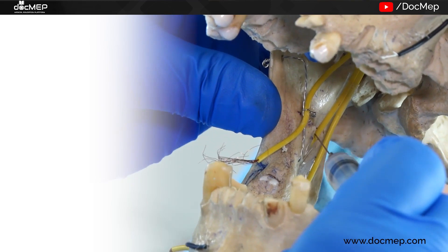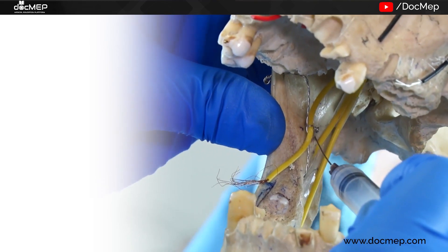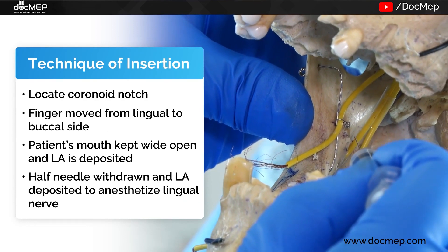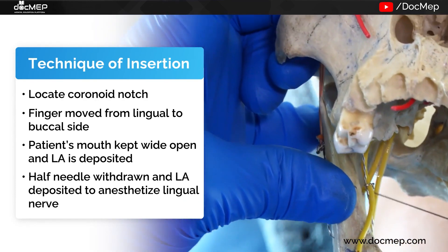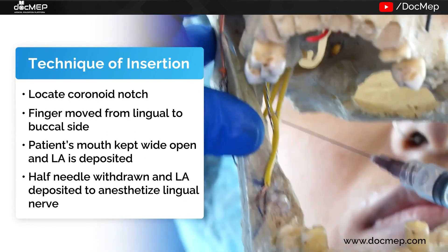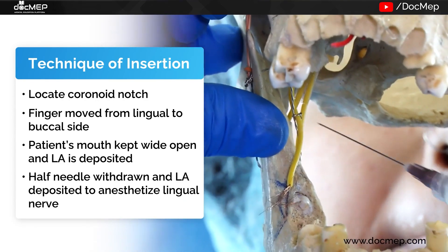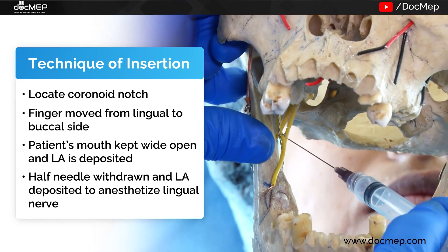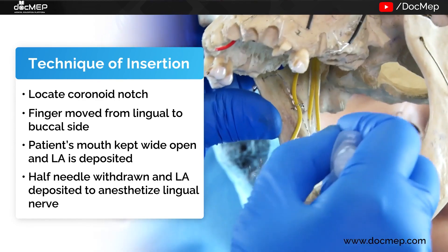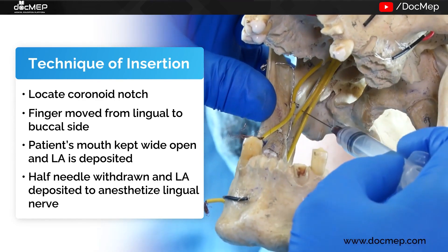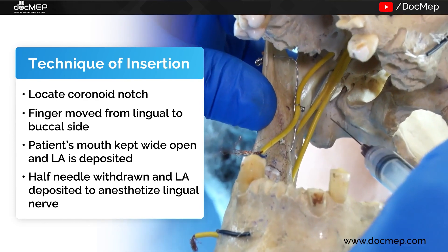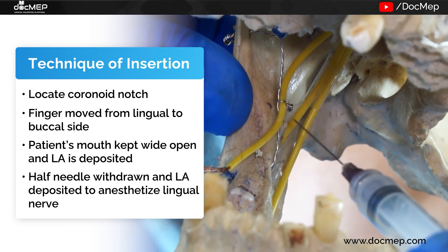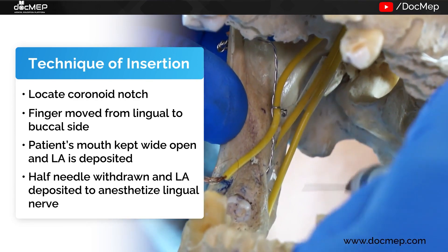Once around 1.8 ml of local anesthesia is deposited, the needle is withdrawn very slowly about 0.5 mm. As observed, the lingual nerve is present anterior and medial to the inferior alveolar nerve. Therefore, while withdrawing, you deposit another 0.5 ml of solution, which will help with the anesthesia of the lingual nerve.